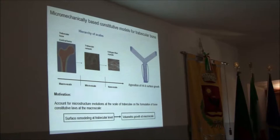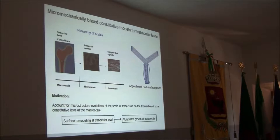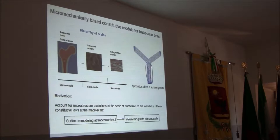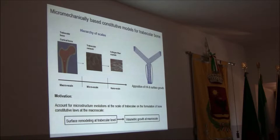I will not consider the nanoscale. I will address the link between the microscale — the scale of the trabecular network — and the macroscale, the scale of a whole bone specimen. The motivation is to account for the evolution of microstructure, specifically surface remodeling phenomena due to deposition of the mineral hydroxyapatite on the external layer of trabeculae. This information about remodeling velocity and shape change should be incorporated into constitutive laws built at the macroscale.